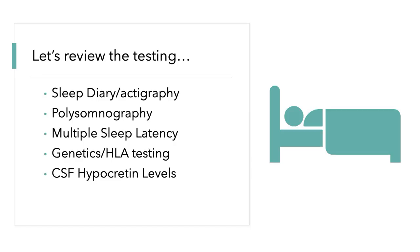In terms of testing — which has been covered in prior presentations — we typically use sleep diary, actigraphy, polysomnography, and multiple sleep latency testing. Sometimes genetics or HLA testing helps determine things, and CSF hypocretin levels can also be measured.